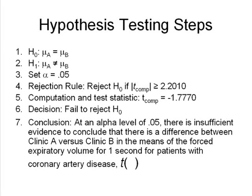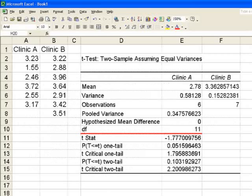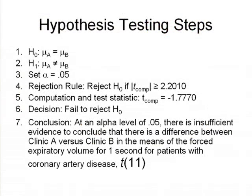Now remember what our degrees of freedom were. We can look here, our degrees of freedom from our output was 11. So in our parenthesis we put t, it's an italicized t, and then parenthesis 11, and parenthesis with no space.